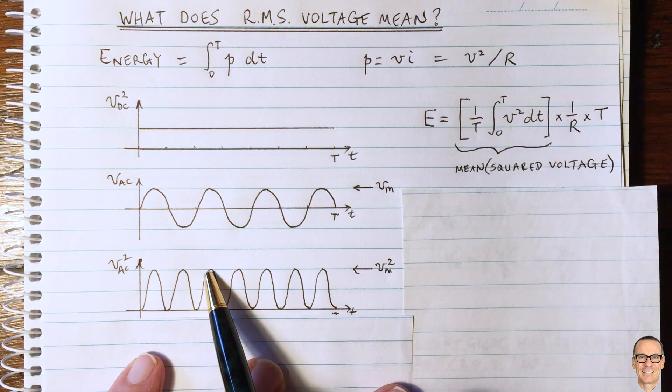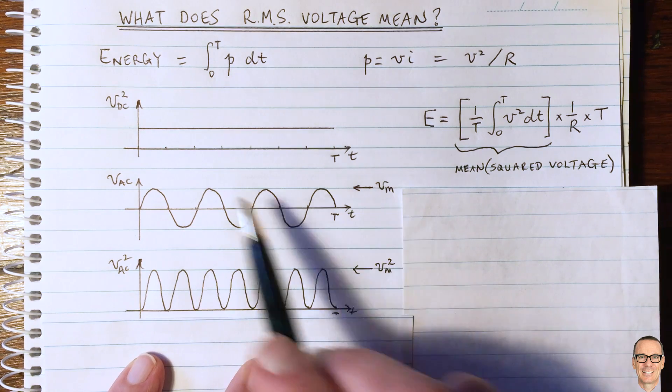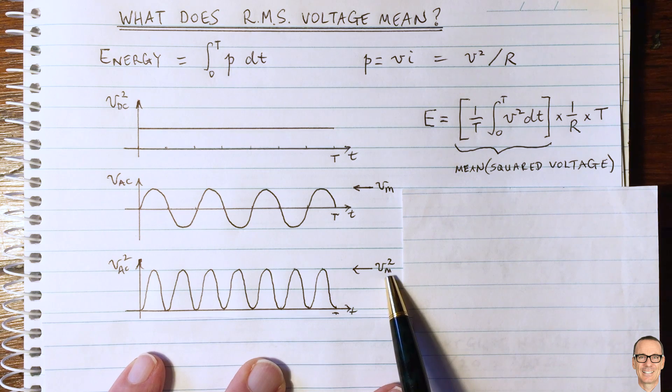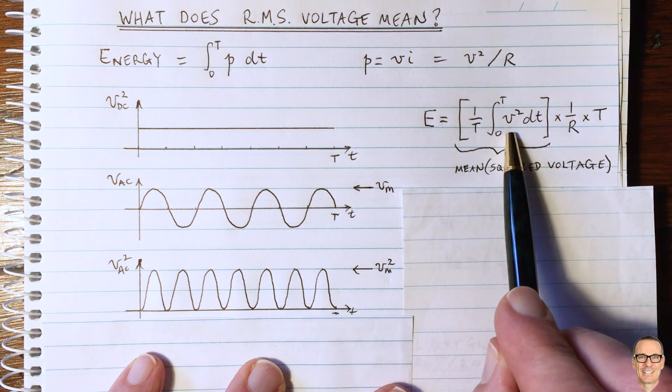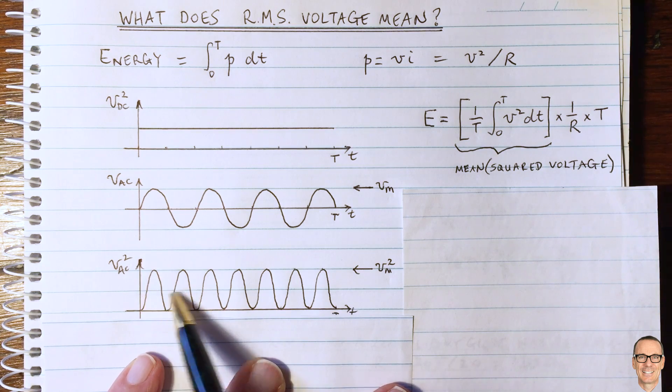Of course, the peak of this voltage squared is the square of the peak of the original voltage. So that's Vm here and Vm squared. Now let's think about taking the integral of this, which is what we need up here. Well, what you can notice is that because it's symmetric,